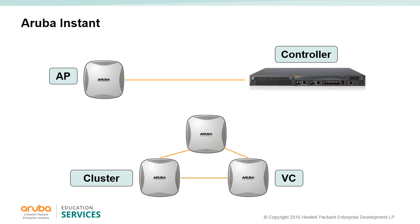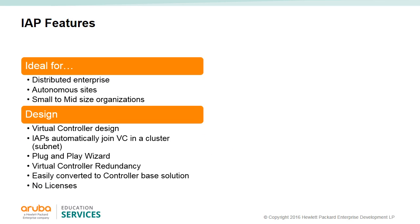In the future, if a customer wishes to implement a full-featured controller-based network, the IAPs can very easily convert into regular controller-based APs and converted back to an IAP if needed. This way no initial investment is lost, and it allows the customer to grow the network. Aruba Instant gives you enterprise-grade access points with a virtual controller design. All IAPs in the same subnet will become a cluster and automatically join the virtual controller. If the IAP running the VC fails, then another IAP in the cluster will take over the VC functionality. The IAP is a full-featured enterprise-grade access point and does not use licenses.